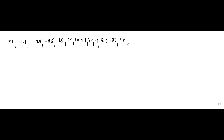We're almost done: 140 comes first, then 186, and finally the largest entry, which is 325. So how many elements are here? 4, 6, 8, 10, 12, 14, 15 — so 15 sample elements.